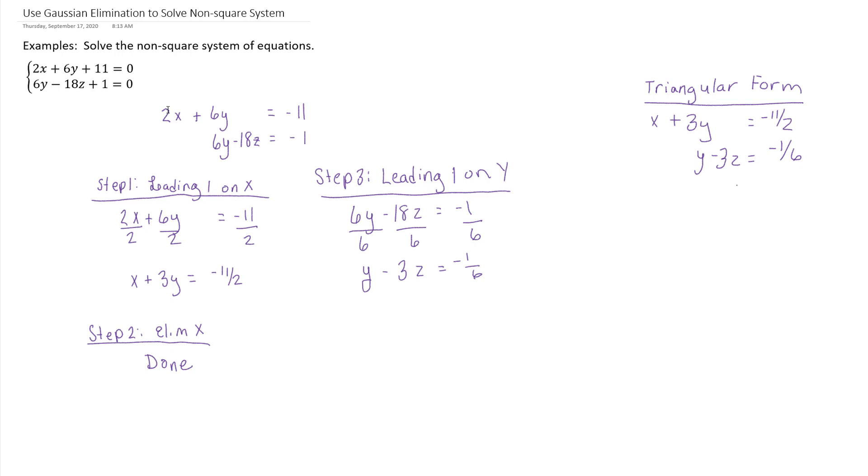And then you do not have any other equations left. So you can say that z equals z naught. So whatever z equals, it's going to be z naught, we'll call it. So then now you have your whole triangular form. You've got your leading 1 on x, your leading 1 on y, and your leading 1 on z.